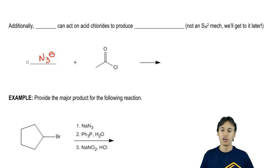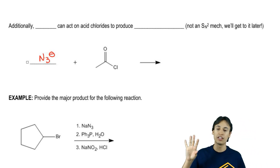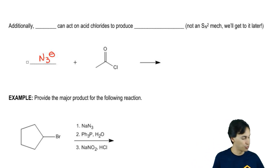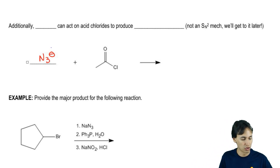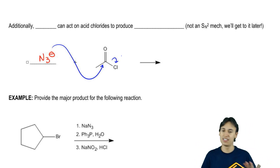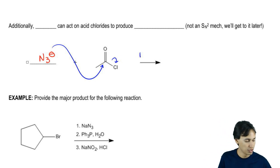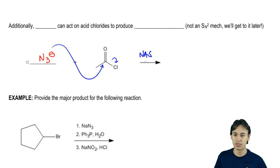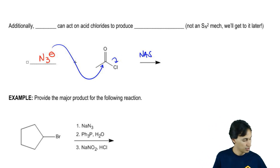Remember that N3 negative can do a substitution reaction with an acid chloride. This isn't the full mechanism, but this is like the abridged mechanism. The full mechanism is called nucleophilic acyl substitution.